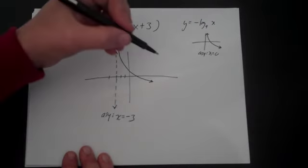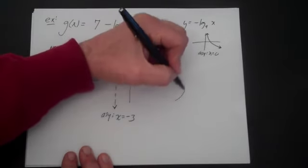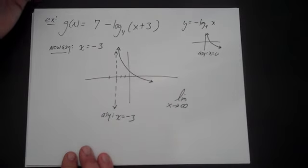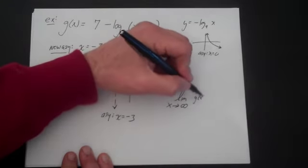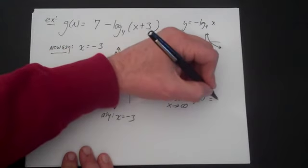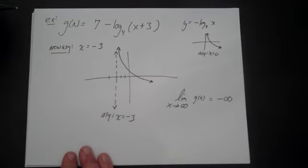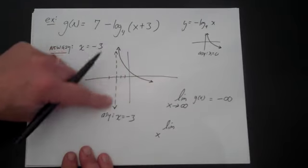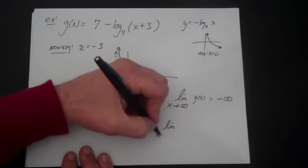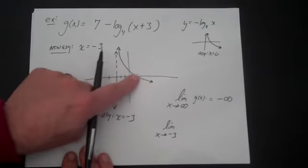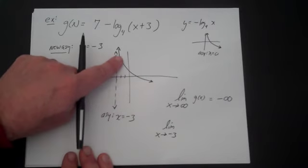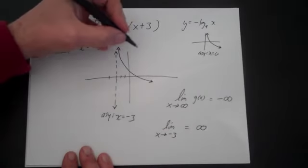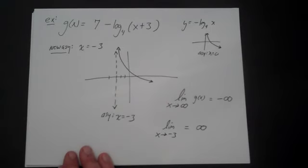Now let's look at the end behaviors. As x goes to positive infinity, g of x goes to negative infinity. The other limit is not as x goes to minus infinity, but as x gets closer and closer to the asymptote. In this case, the limit as x goes to minus 3 — as x gets closer and closer to minus 3 — y gets closer and closer to positive infinity. That's your asymptote behavior.